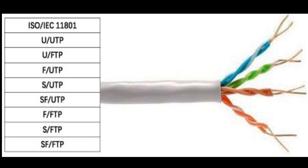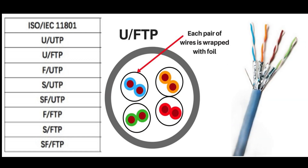UFTP — UFTP is a foiled twisted pair, but it is not a shielded pair of pairs.